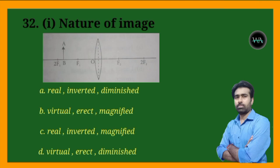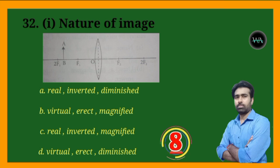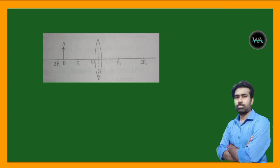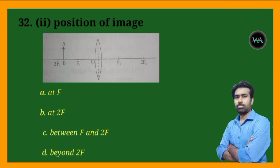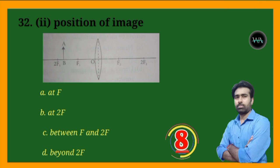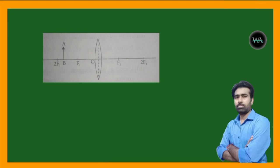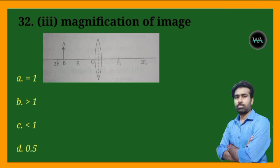Next question: nature of the image — a very, very important question. Also, position of image. And the next part: magnification of the image — equal to 1, greater than 1, less than 1, or 0.5?